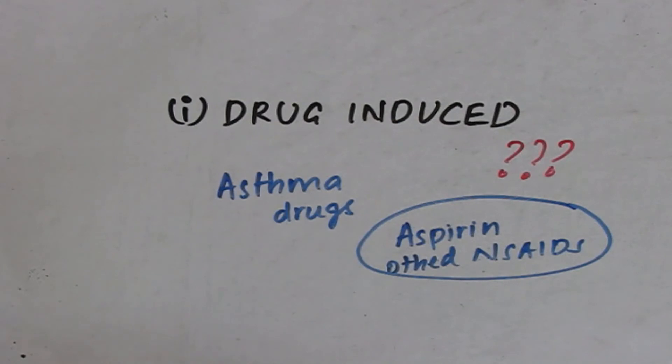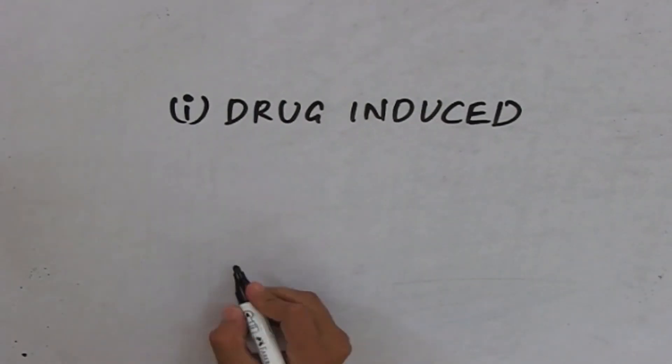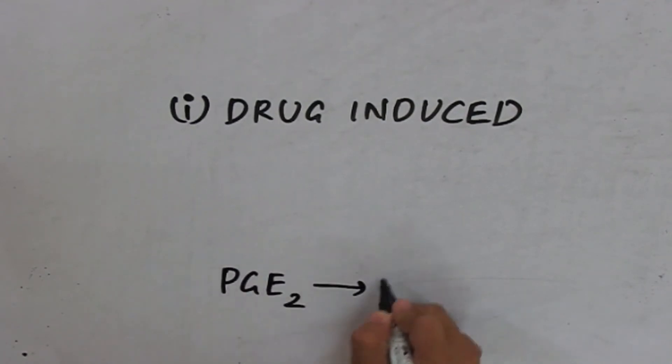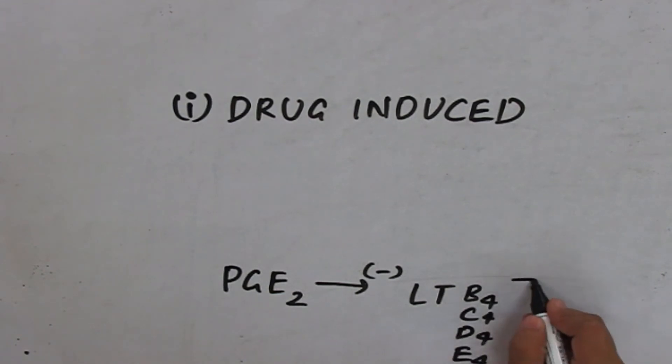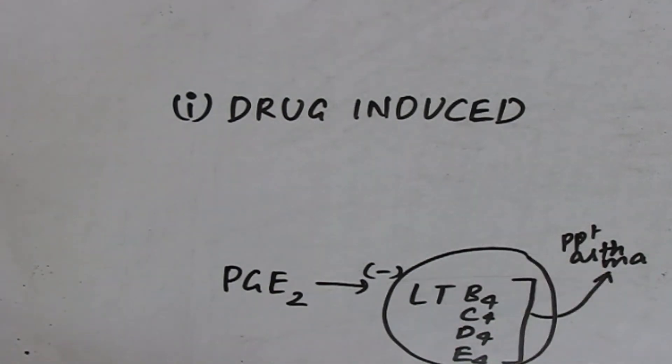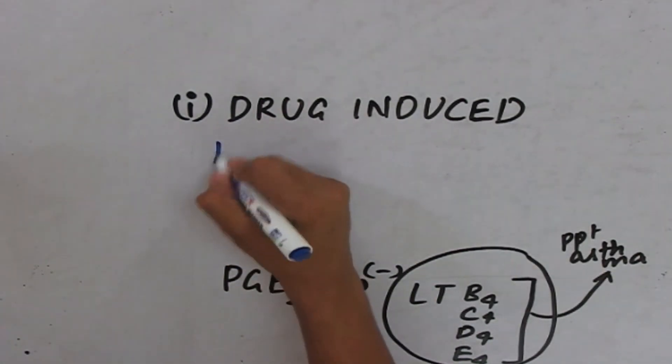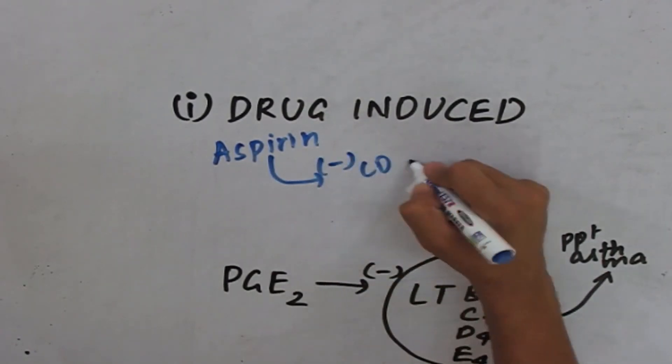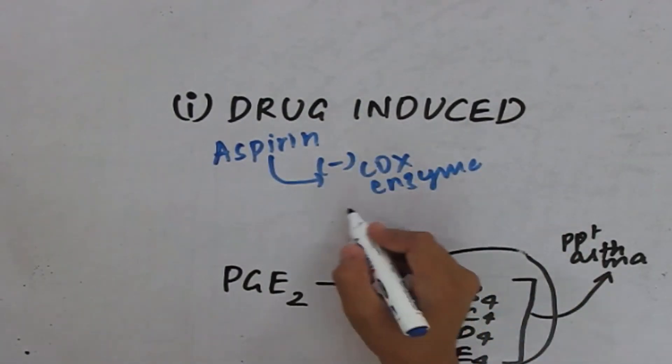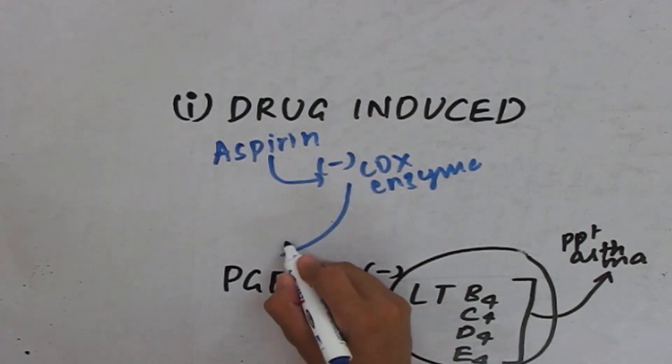How does aspirin and other NSAIDs cause asthma? Usually what happens is prostaglandin E2 inhibits the formation of leukotrienes B4, C4, D4, and E4. Leukotrienes B4, C4, D4, and E4 are the mediators of asthma. Now, when aspirin is given, we all know that aspirin is an inhibitor of COX enzyme, the same enzyme which is required for the formation of PGE2.